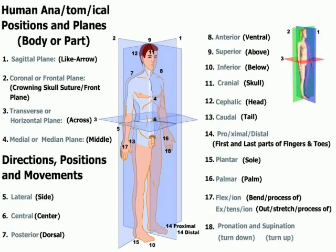Number seventeen is flexion and extension. Flexion is the process of bending or closing — you take your fingers, flex them, and bend them together. Extension is the process of stretching outward, stretching the fingers out.